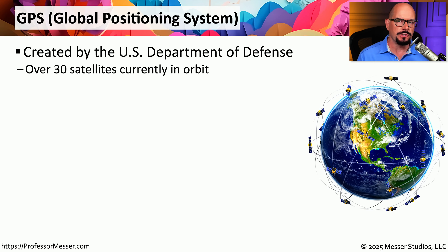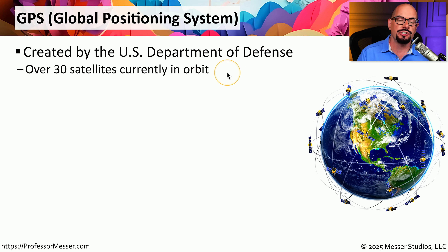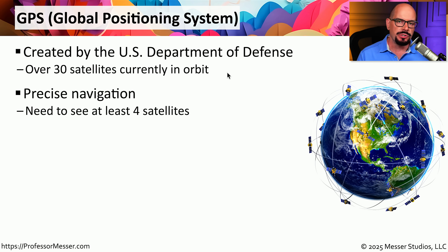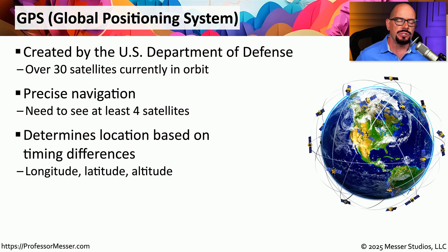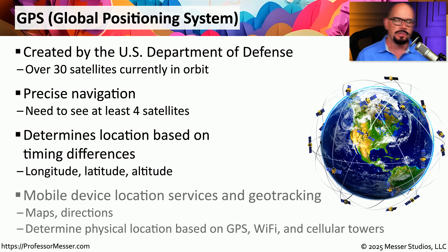If you've ever used the Maps functionality on your mobile phone, you know the GPS capability can be very helpful. GPS is the Global Positioning System, a technology created by the United States Department of Defense. It uses satellites circling the Earth, and if you can see four of those satellites with your phone, you'll get accurate GPS readings. GPS uses differences in signals received from multiple satellites to determine your longitude, latitude, and altitude above sea level.